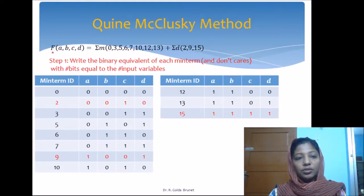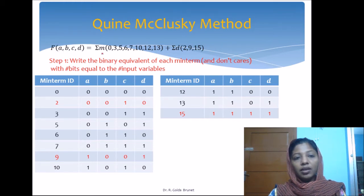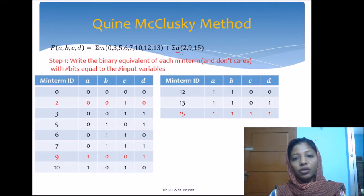Let us now try to simplify the Boolean expression F of A, B, C, D with minterms 0, 3, 5, 6, 7, 10, 12, 13, with don't care minterms to be 2, 9, and 15.